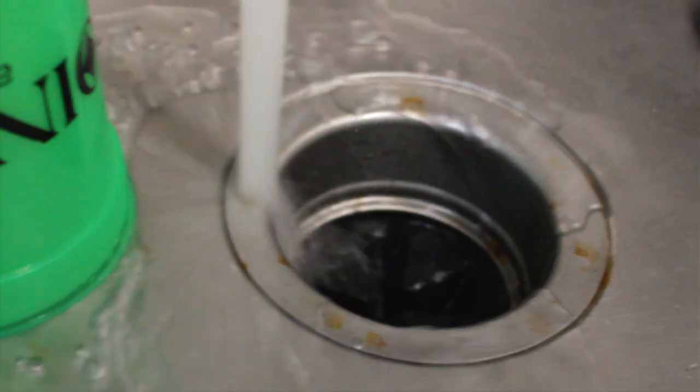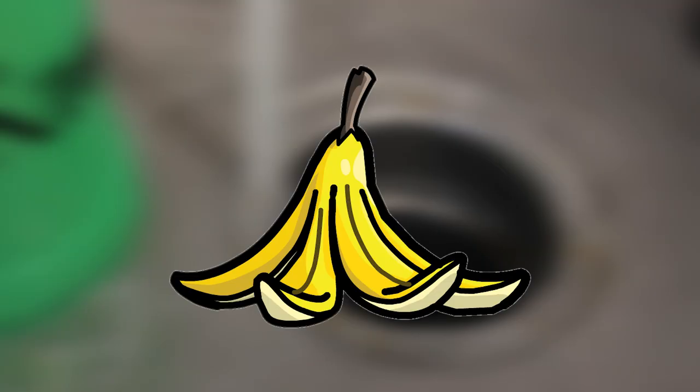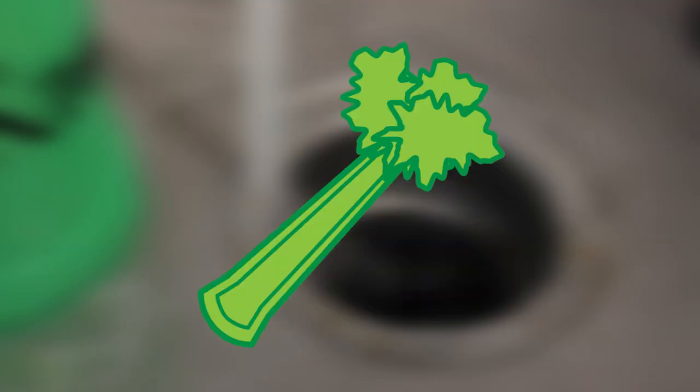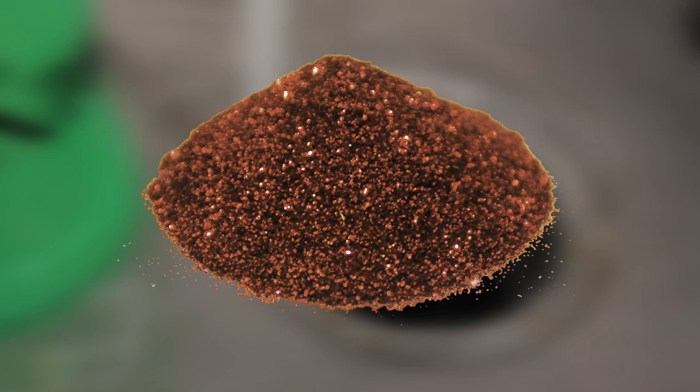Some common food items that should not be put in the garbage disposal include banana skins, broccoli, celery, bones, eggshells, and coffee grounds.